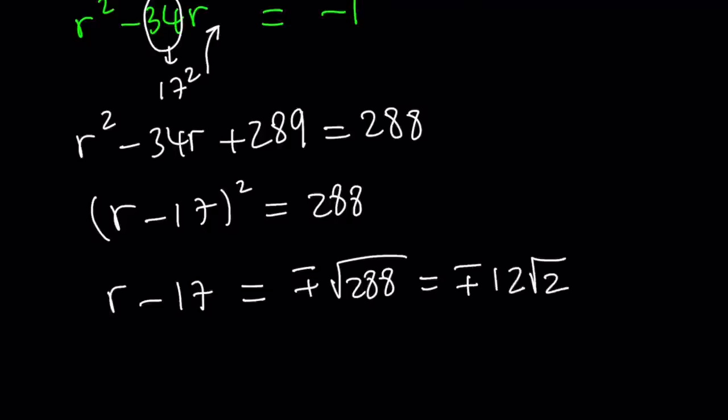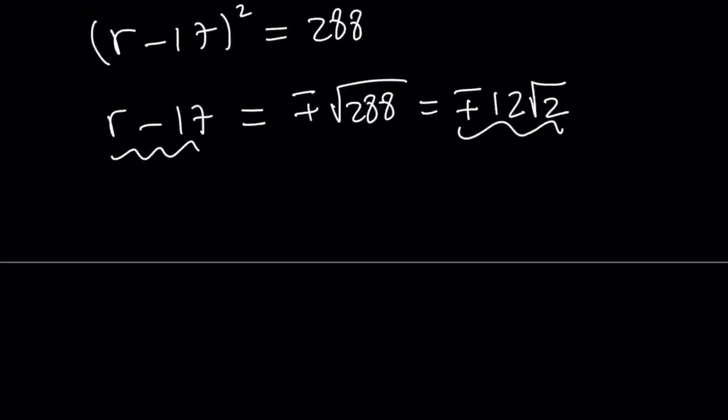Alright, and now we have this equation, r minus 17 is equal to that. We can add 17 to both sides and we get the r value as 17 plus minus 12 root 2. So, this gives us two solutions because this is a quadratic equation, right? Which solution are we going to use? We're actually going to use both.